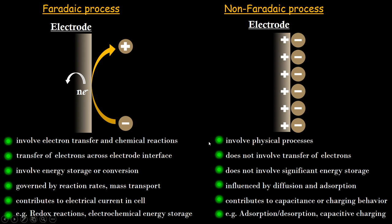The non-faradic processes — the typical characteristics are: first, it involves physical processes, meaning there is no chemical reaction taking place. The second point is that it does not involve transfer of electrons — this is the fundamental point we already talked about. The third point is that it does not involve significant energy storage, although this is not true for all cases; for supercapacitors, energy storage is happening and that is also a non-faradic process. The next point is that it is influenced by diffusion and adsorption.